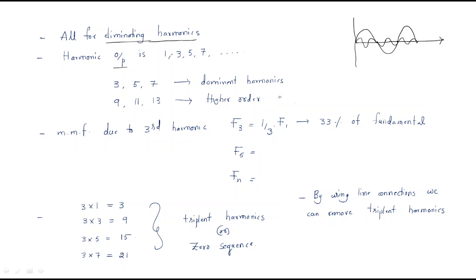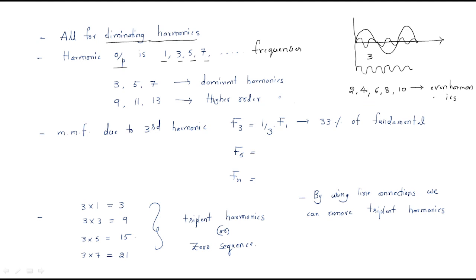Generally, the harmonics are 1, 3, 5, 7 — these are the odd frequencies. For the third harmonic we have three cycles, for the fifth we have five cycles, and for the seventh we have seven cycles. The even harmonics — 2, 4, 6, 8, 10 — have the advantage that the positive and negative cycles cancel each other, so the total RMS voltage becomes zero. That is why even harmonics are eliminated by themselves.